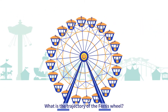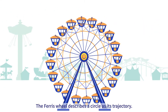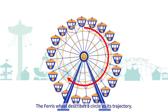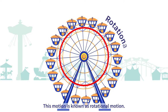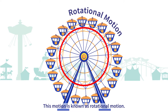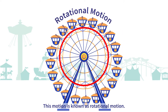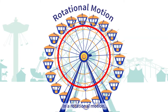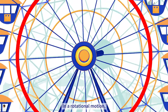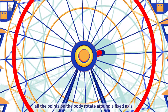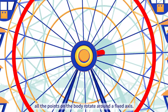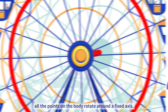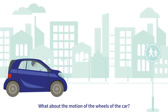What is the trajectory of the ferris wheel? The ferris wheel describes a circle as its trajectory. This motion is known as rotational motion. In rotational motion, all the points on the body rotate around a fixed axis.